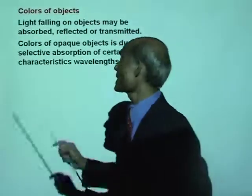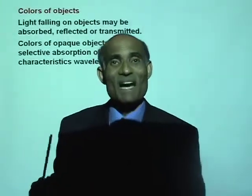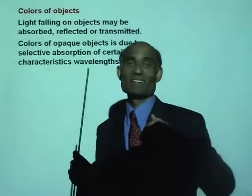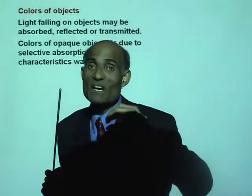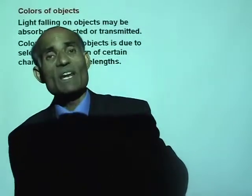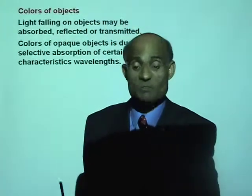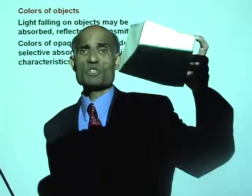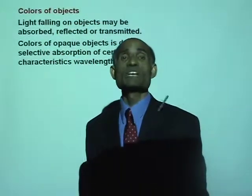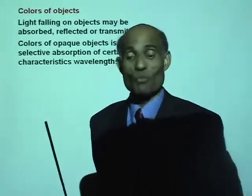Now, colors of opaque objects. What is an opaque object? An opaque object is one that does not transmit light. An object that transmits light is transparent. Glass is transparent, whereas this box is opaque. So colors of opaque objects are due to selective absorption of certain characteristic wavelengths.